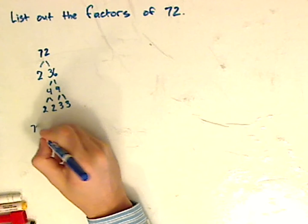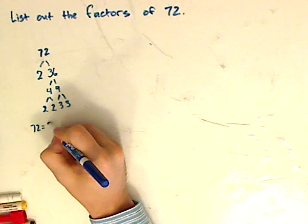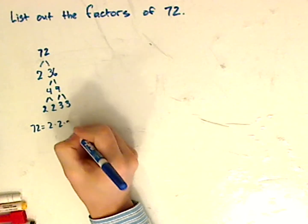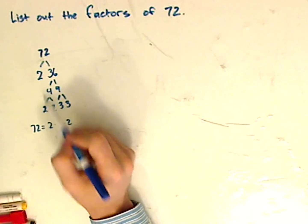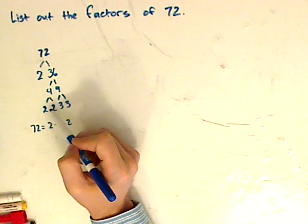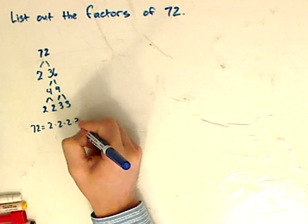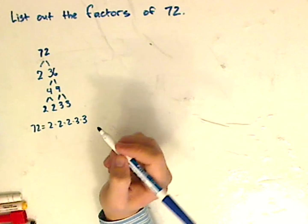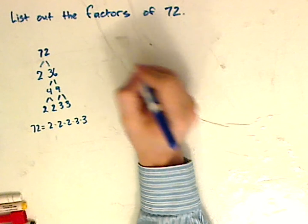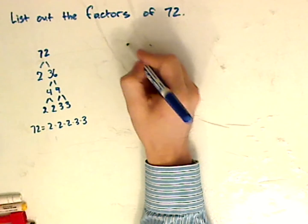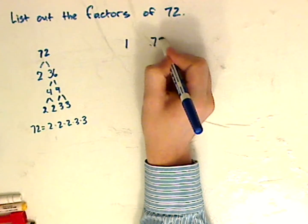So 72 has factors of 2 times 2 times 2, the prime factorization, sorry, is the end of the branches, which is 2 times 2 times 2 times 3 times 3. Now factors is what times what will give me that number, so 1 times 72.